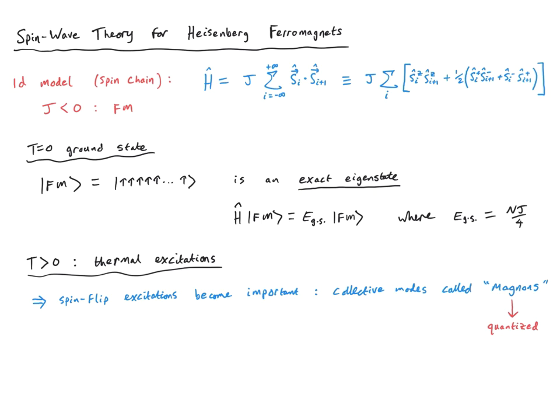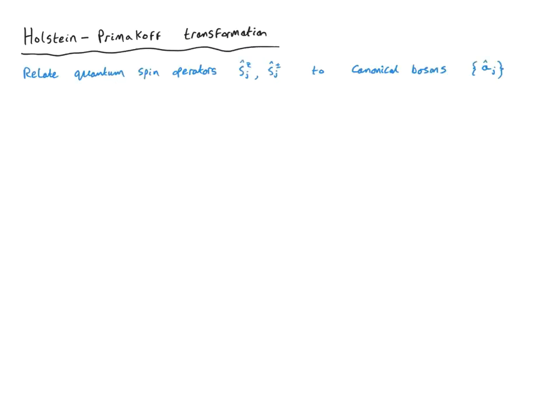We're interested in what emerges when you bring together a large number of spins. We'll see that there is a magnetic spin texture forming spin waves. We're going to develop a semi-classical spin wave theory based on the so-called Holstein-Primakoff transformation. The idea is to relate our quantum spin operators — the S_z, S_plus, and S_minus operators for a given site j — to canonical bosons labeled a_j hat.